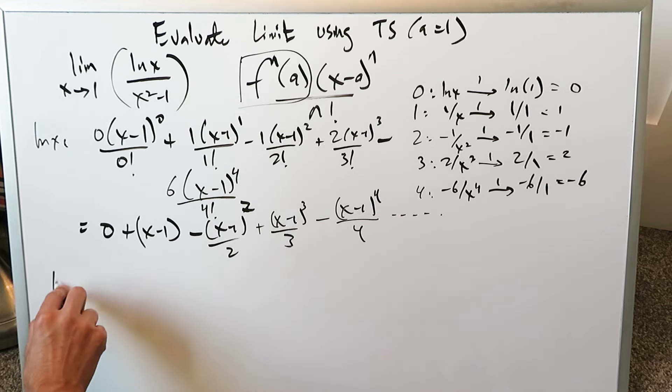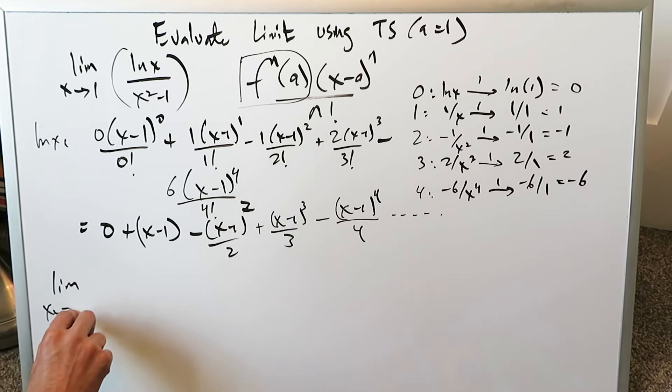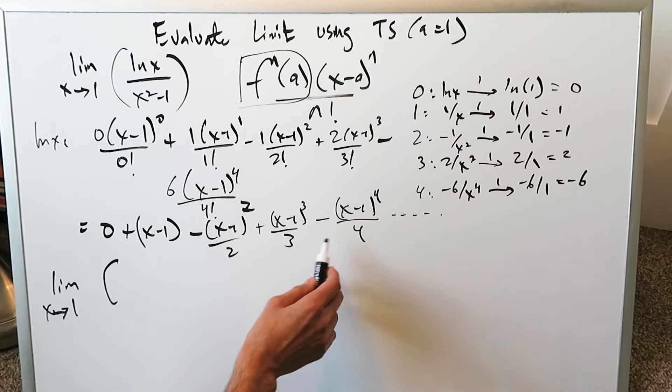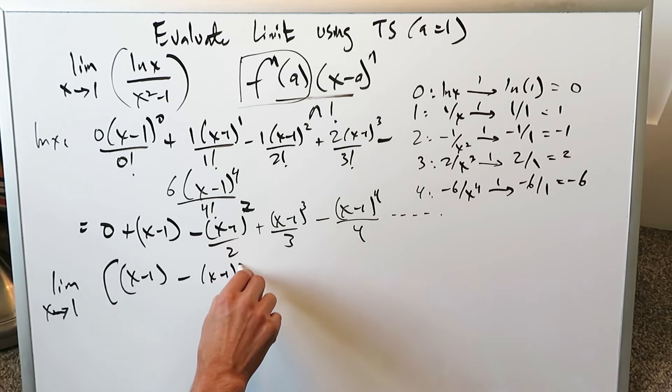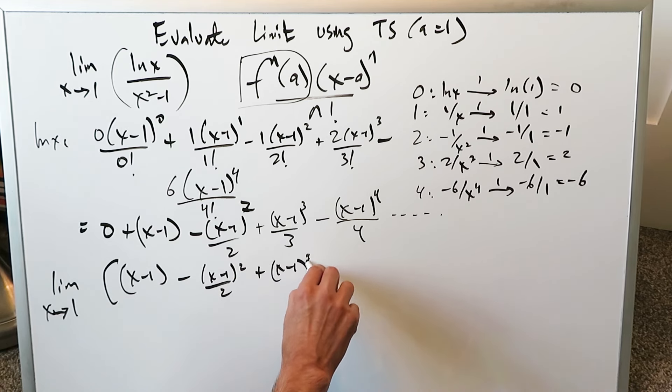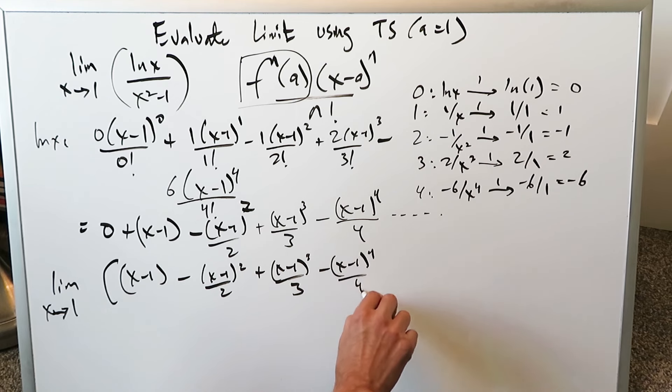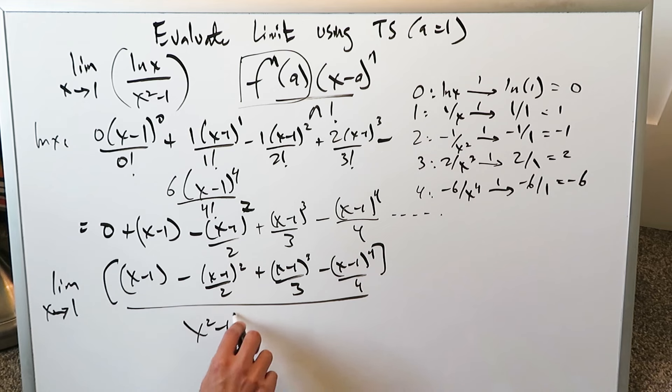Now let's evaluate our limit. Limit as x approaches 1. The essence here is you're bringing the expansion into your limit. This right here is my expansion. Forget the 0, it's irrelevant. x minus 1, keep this parenthesized, minus x minus 1 whole square over 2 plus x minus 1 whole cube over 3 minus x minus 1 to the power of 4 over 4, all divided by x squared minus 1.